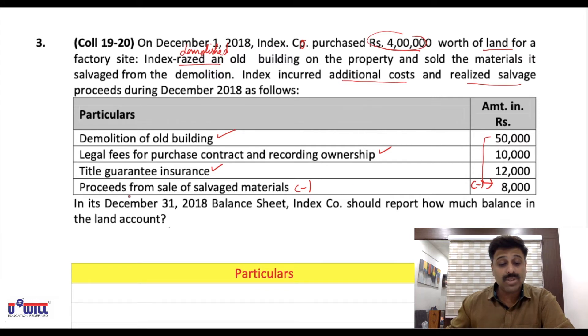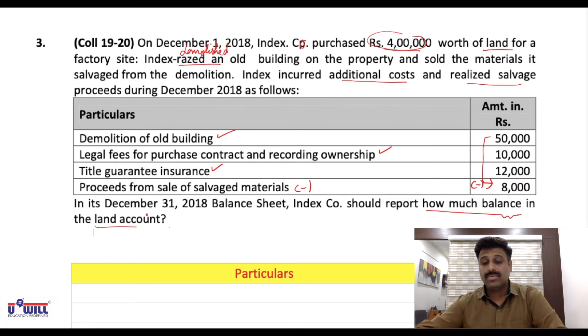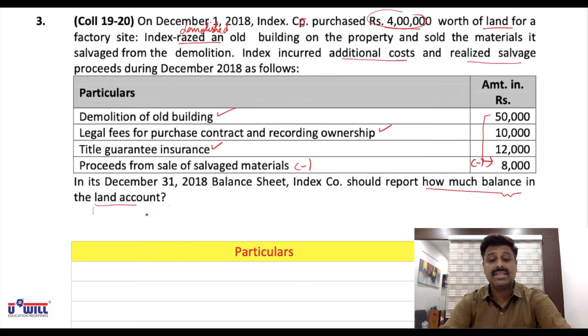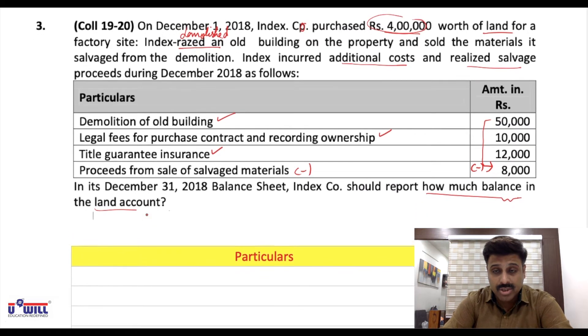We spent 50,000 demolishing the old building and sold the scrap for 8,000, so the net cost is only 42,000. In its December 31, 2018 balance sheet, Index Company should report the land account balance. Let us solve it as we did the previous one — first, cost of land: 4 lakhs.